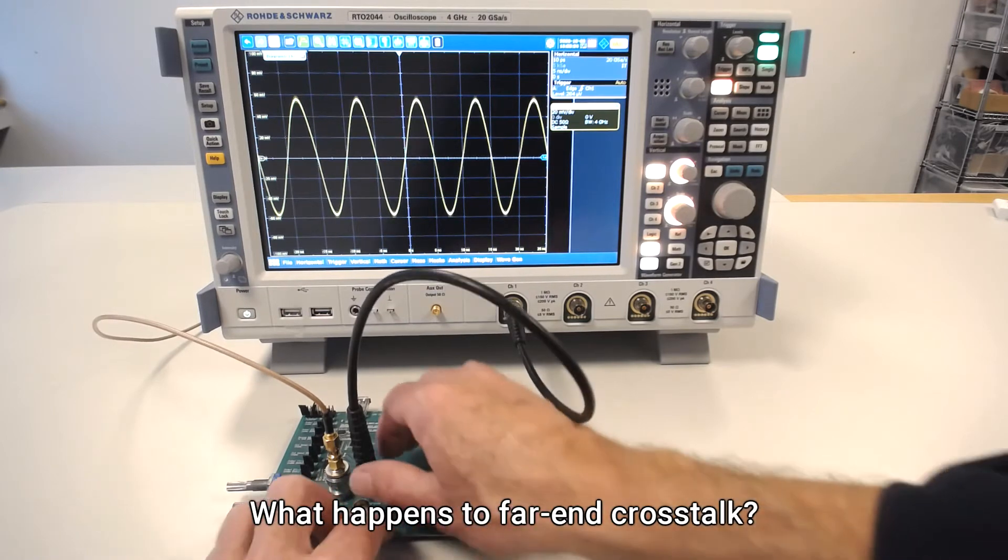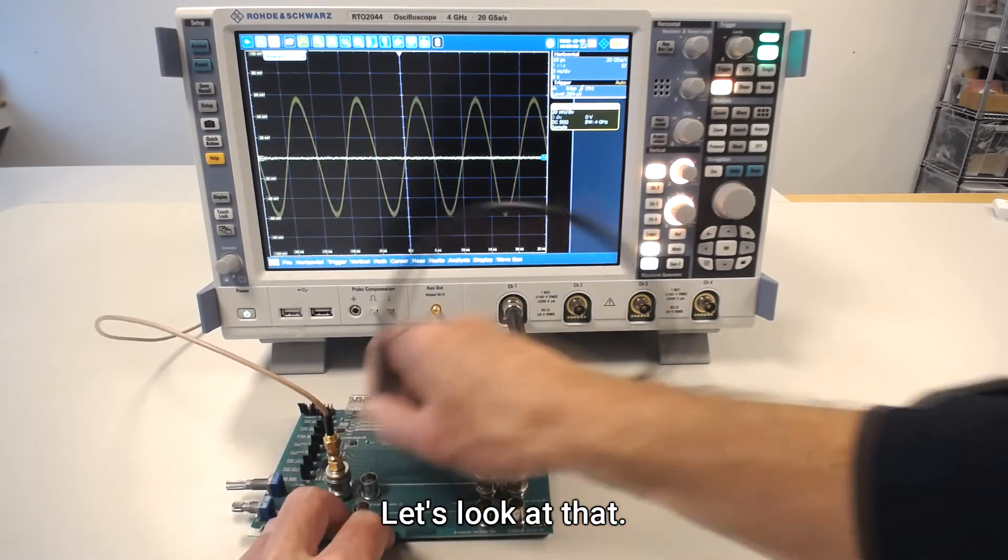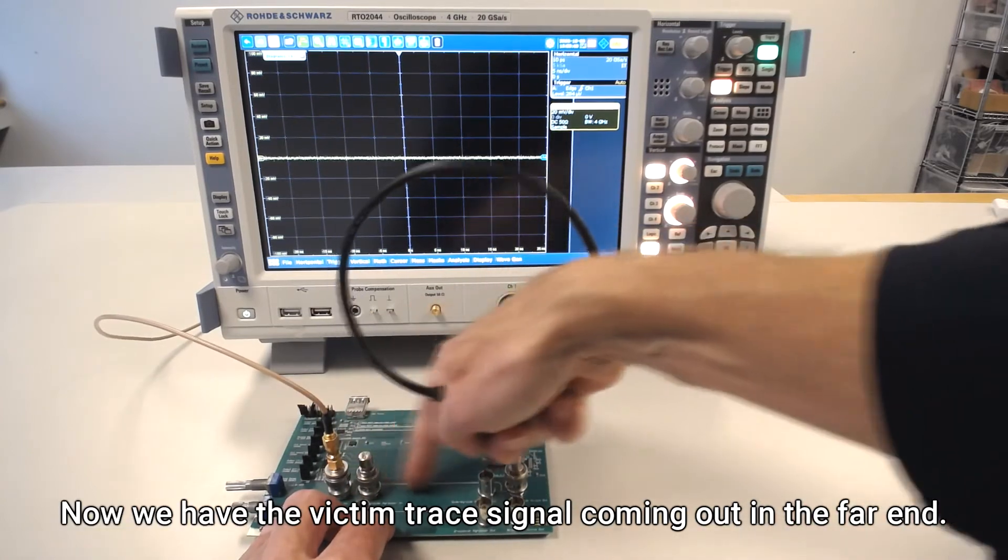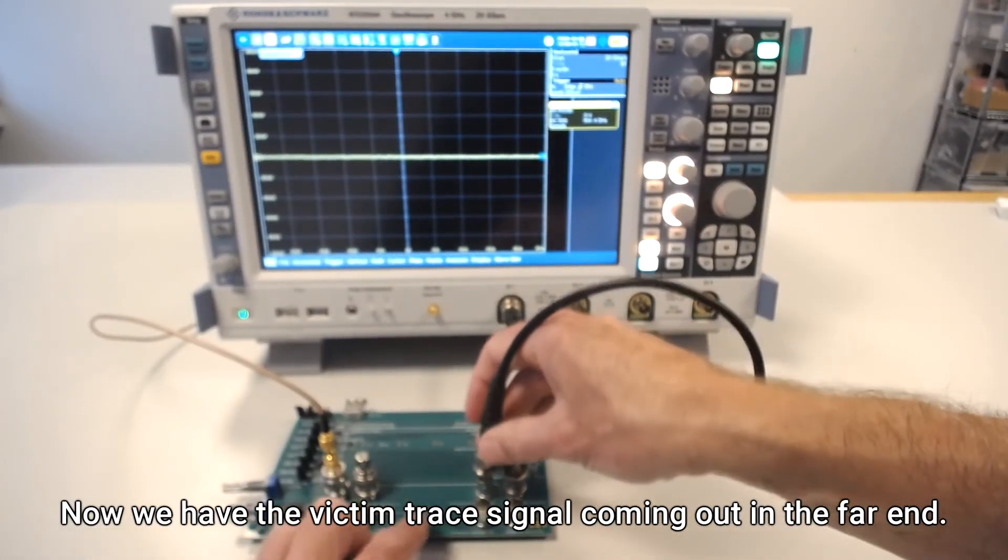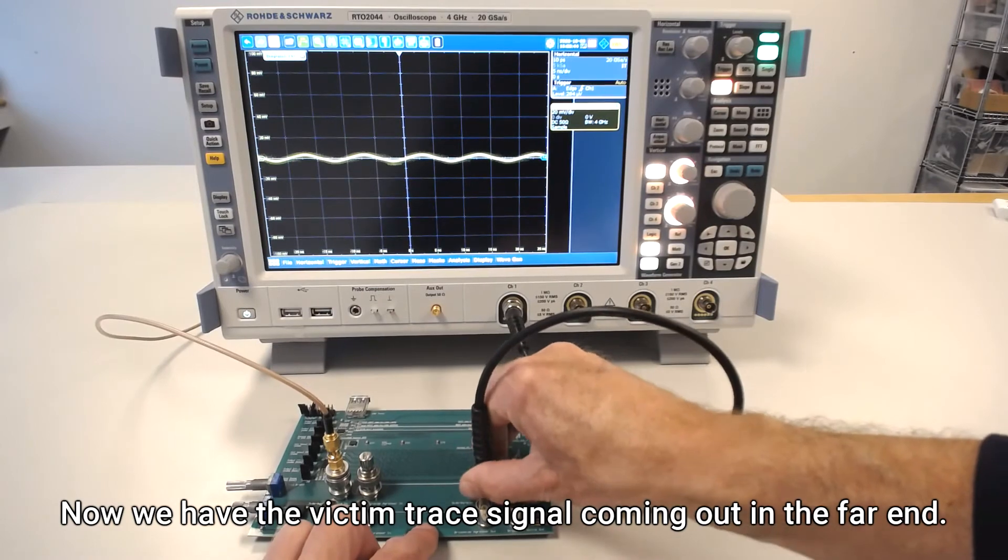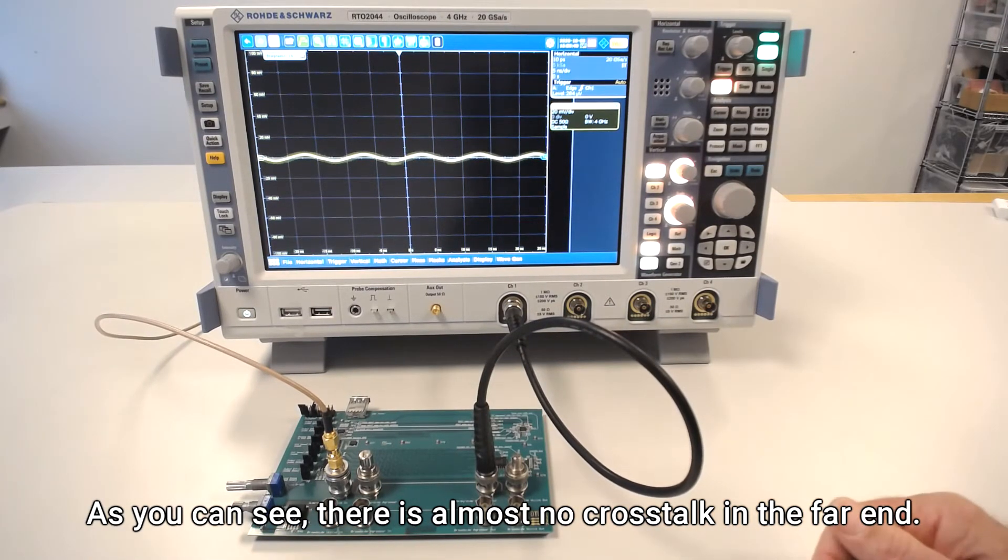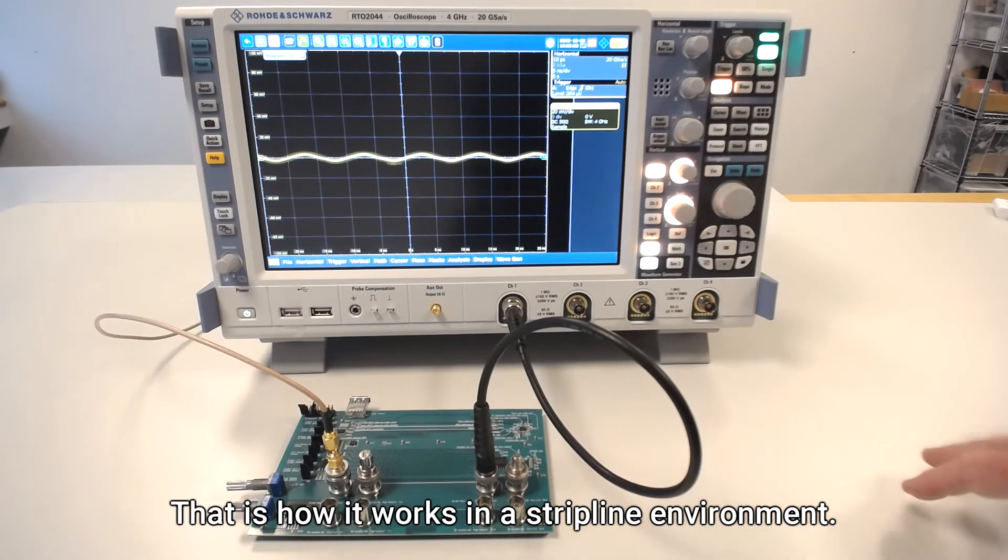What happens to far-end crosstalk? So let's look at that. So now we have the victim trace signal coming out here in the far end, and as you can see there's almost no crosstalk in the far end. That is how it works in the stripline environment.